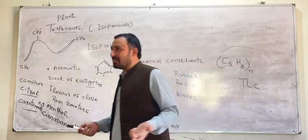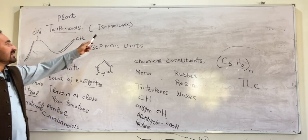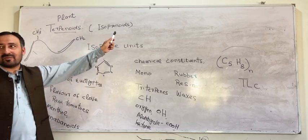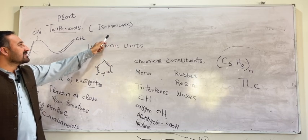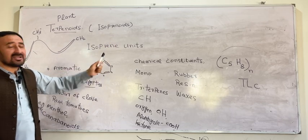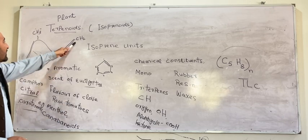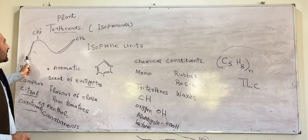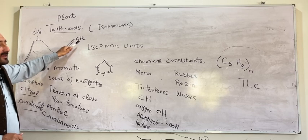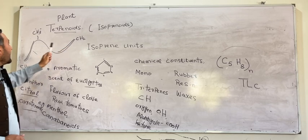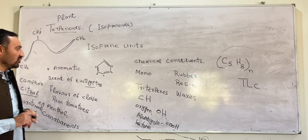What are the terpenoids? The terpenoids are basically made from isoprenoids. Isoprenoids are the isoprene units. This is the general formula of the isoprene units, which is composed of methyl and ethyl — CH2, CH3, and CH2.